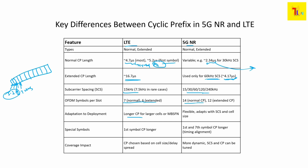There are also special symbols: in LTE the first symbol has a slightly longer CP, whereas in 5G NR the first and seventh symbols have longer CP for timing alignment purposes. Regarding coverage impact, in LTE the cyclic prefix is chosen based on cell size and delay spread, while in 5G NR the CP is more dynamic — depending on your coverage, you can dynamically choose your subcarrier spacing and cyclic prefix for better optimized cell coverage and throughput.